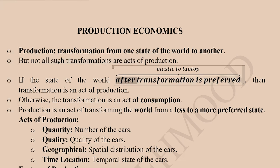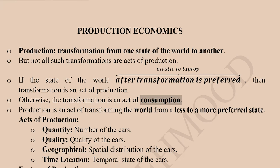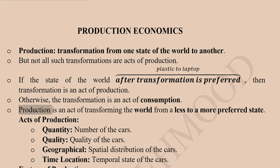For instance, transformation of plastic into a laptop is production because a laptop has significant utility for us. Transformation can also result in consumption — when liquid fuel is converted into gaseous form within a vehicle, it is transformation, but it represents consumption of fuel. We are focusing on that state which is preferred, and that more preferred state is usually what we call the production process.